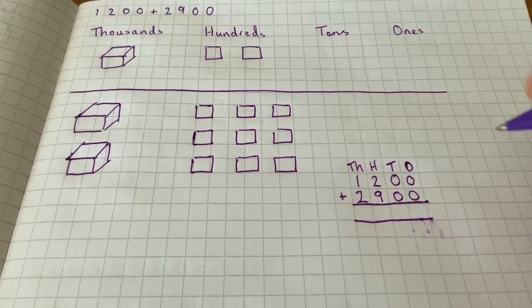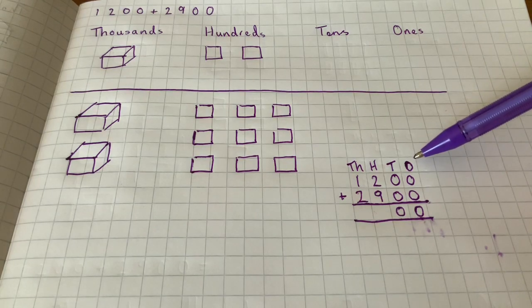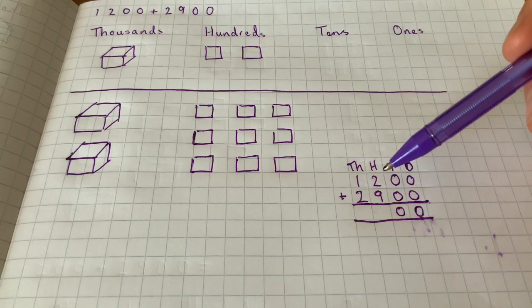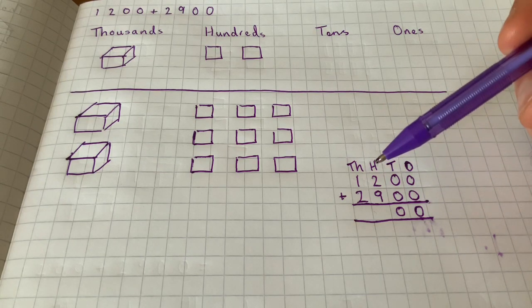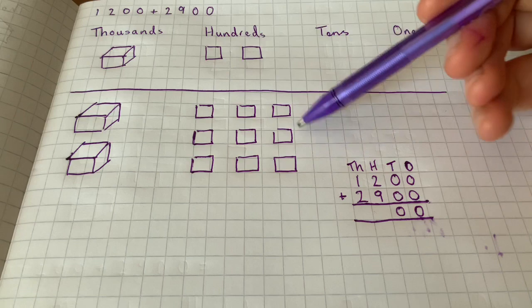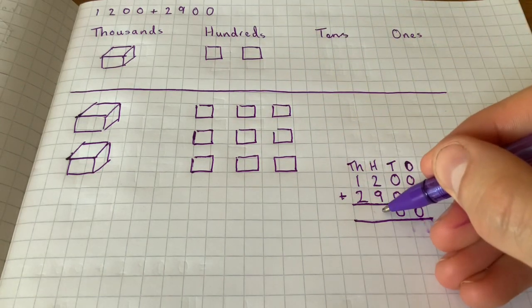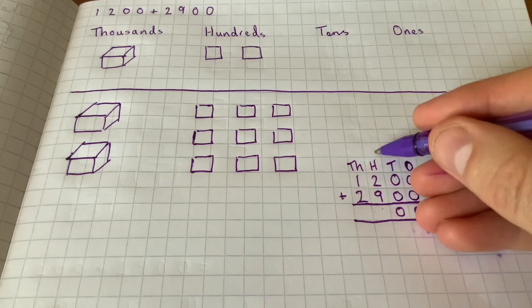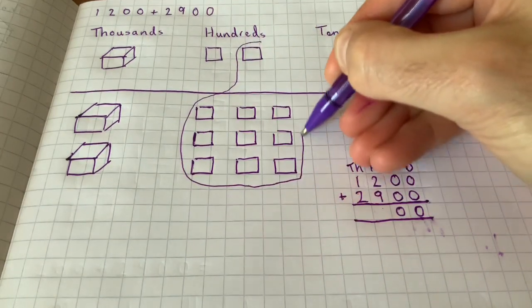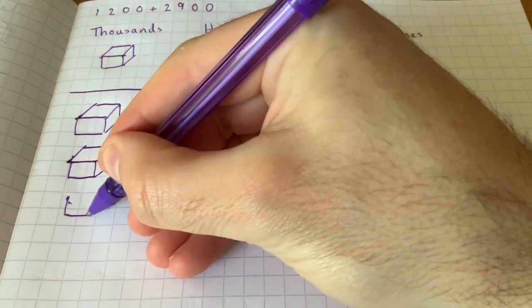Now then, it's very important that we still keep our ones, tens, hundreds, and thousands, so we know where our place values are. So I've already completed the first part because we're adding zero ones and zero tens, so we've got zero here. And moving on to our hundreds now, we've got two hundreds and nine hundreds. Now then, we look over here and we've added all of these up together, we know that we've got eleven, but we're not able to actually write eleven hundreds here.